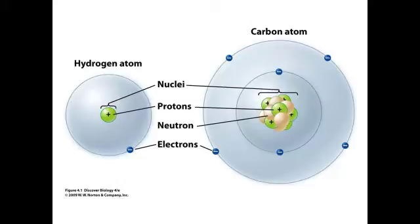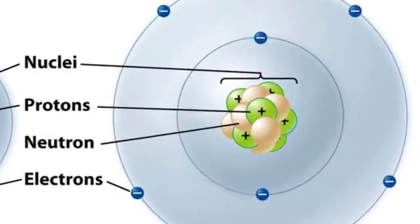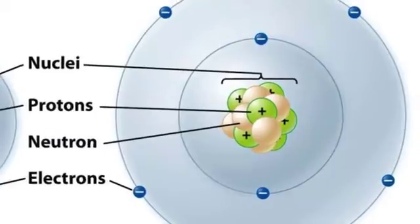Different elements have atoms with different numbers of subatomic particles. When we look at the organization of an atom, the protons and neutrons are found together in a dense central cluster known as the nucleus. The word nucleus means center or core.